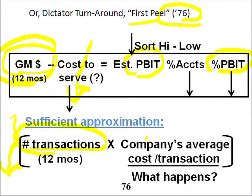This was all commemorated in a case study written by the Harvard Business School. Jim Heskett was the professor in charge of the department that wrote the case study called 'Paper Distributors, Inc.: The Small Order Problem.' It's since out of print.